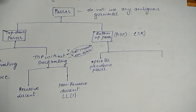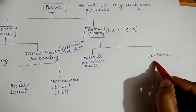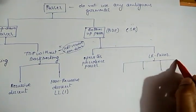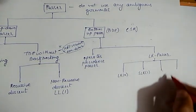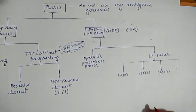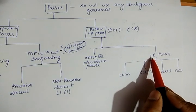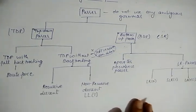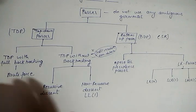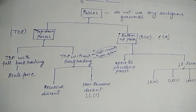The second category of Bottom-Up Parser is the LR parser. In LR parsing, we discuss four types: LR(0), SLR(1), LALR(1), and CLR(1). LR means we scan the input from left to right with reverse of rightmost derivation. We will cover each technique step by step with solved examples in future videos. Thanks for watching.